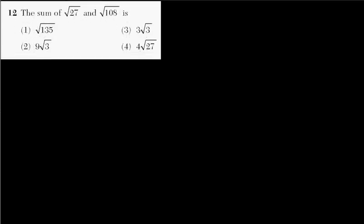Let's try number 12. It says the sum of square root of 27 and square root of 108 is one of these expressions. If you're using a calculator, if you're allowed to use a calculator on these tests, then take the square root of 27, add it to the square root of 108, write that number down out to like three decimal places, and then just compute the square root of 135, and compute 9 times the square root of 3, and compute 3 times the square root of 3, and compute 4 times the square root of 27. And one of those numbers is going to match the sum of these two, and that's going to be your answer. Of course, that doesn't really tell you anything about what's actually going on with the square roots.